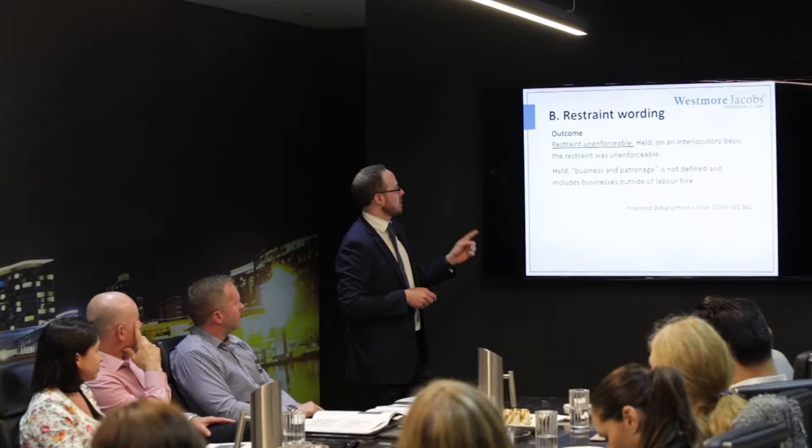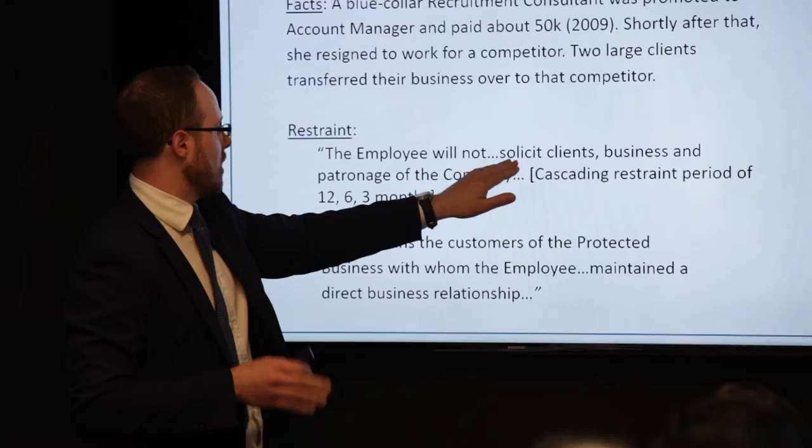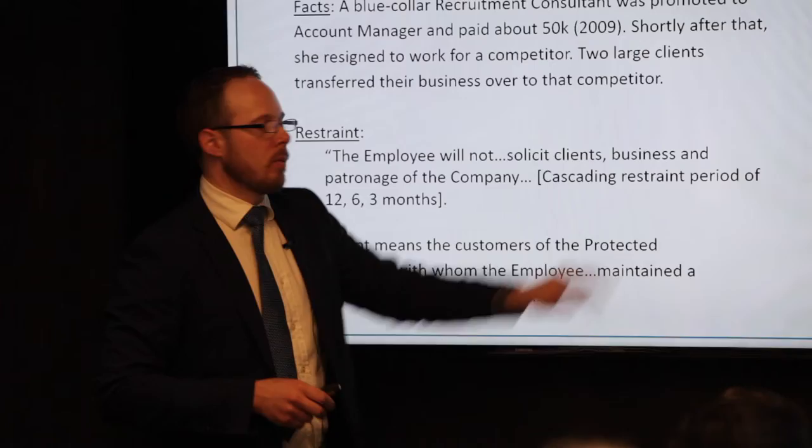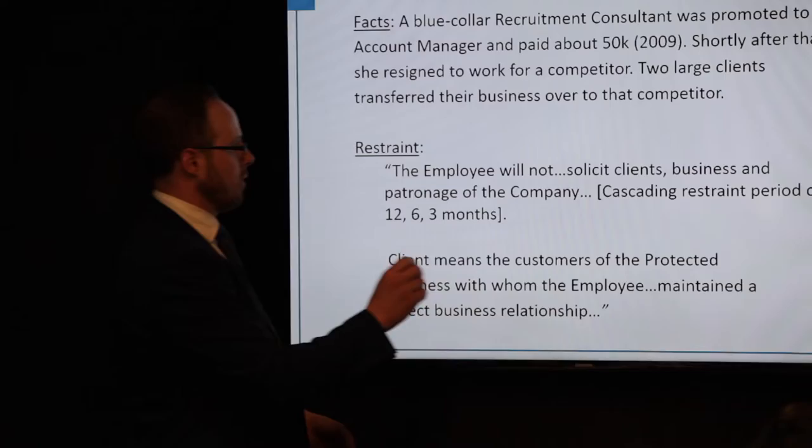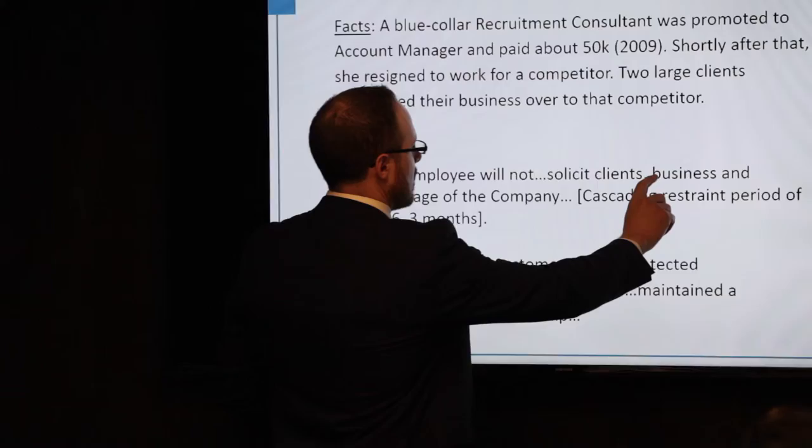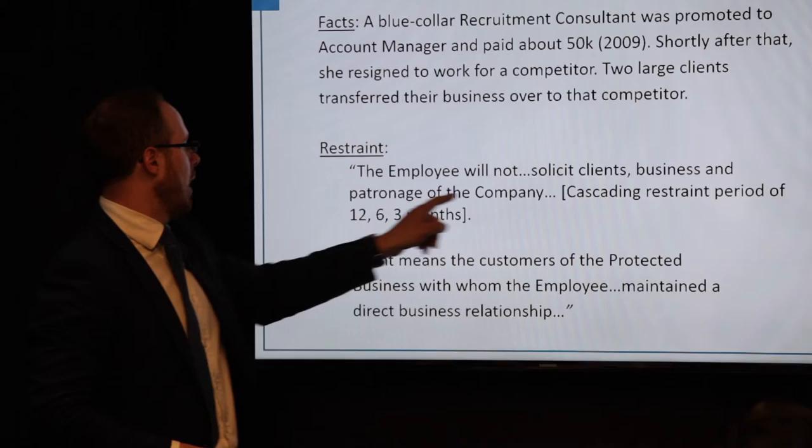It was held that 'business and patronage' is not defined and includes business outside of labour hire. The difficulty with this clause was 'solicit clients' business and...' — what the courts do, though they have a reluctance to do this with restraints not drafted properly, is to say: well, 'clients' might be okay, but 'business' is probably too broad, put a blue line through it. But they can't put a blue line through it because the word 'and' should have said 'or.' The word 'and' should have said 'or.'